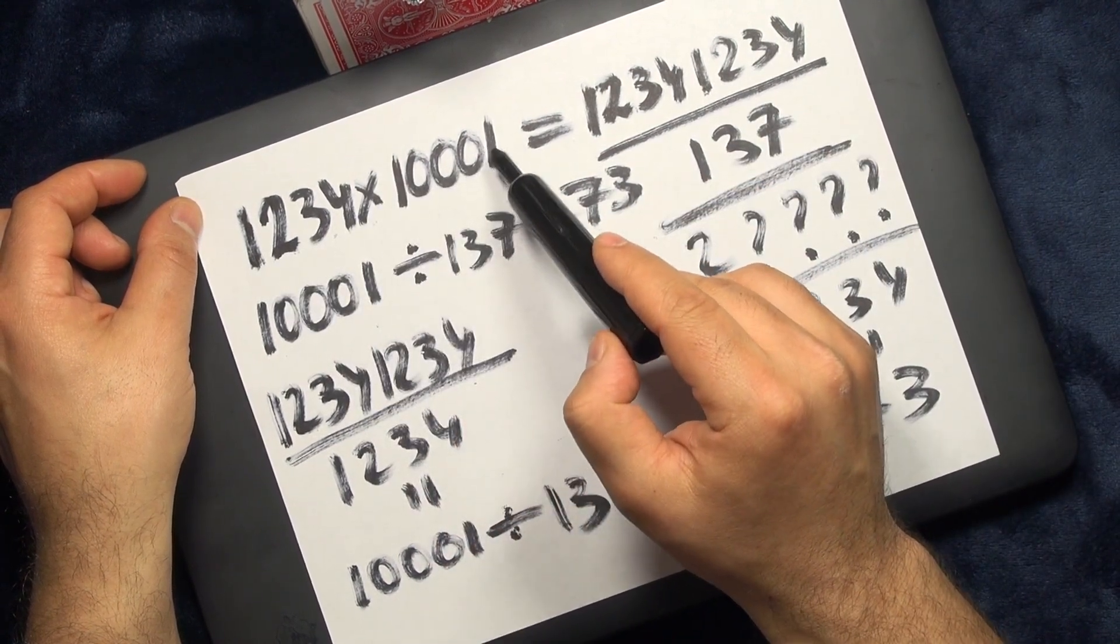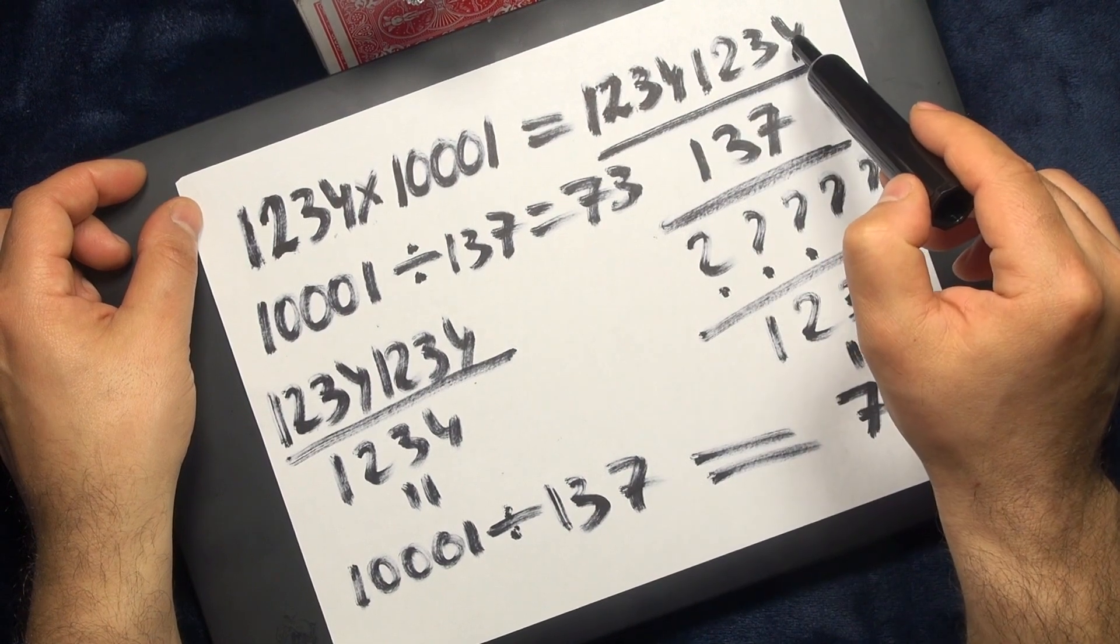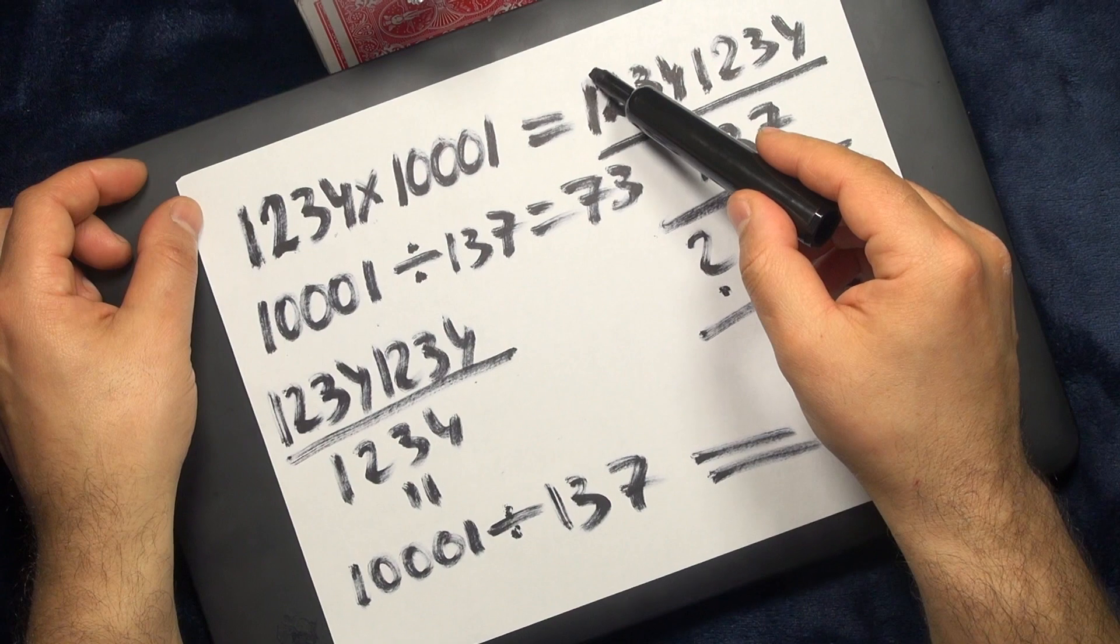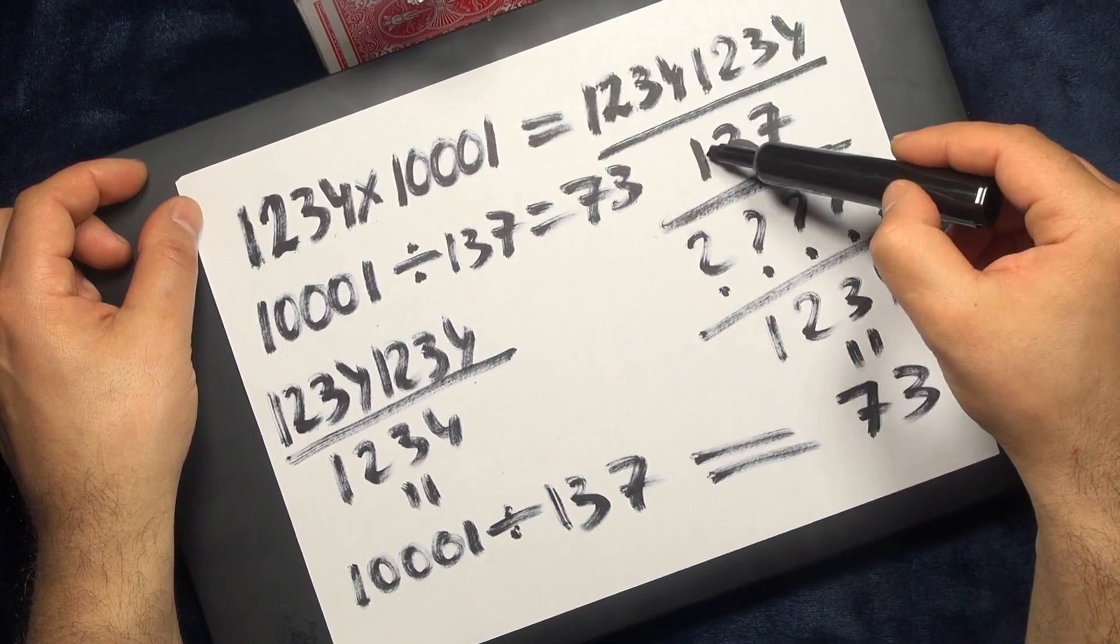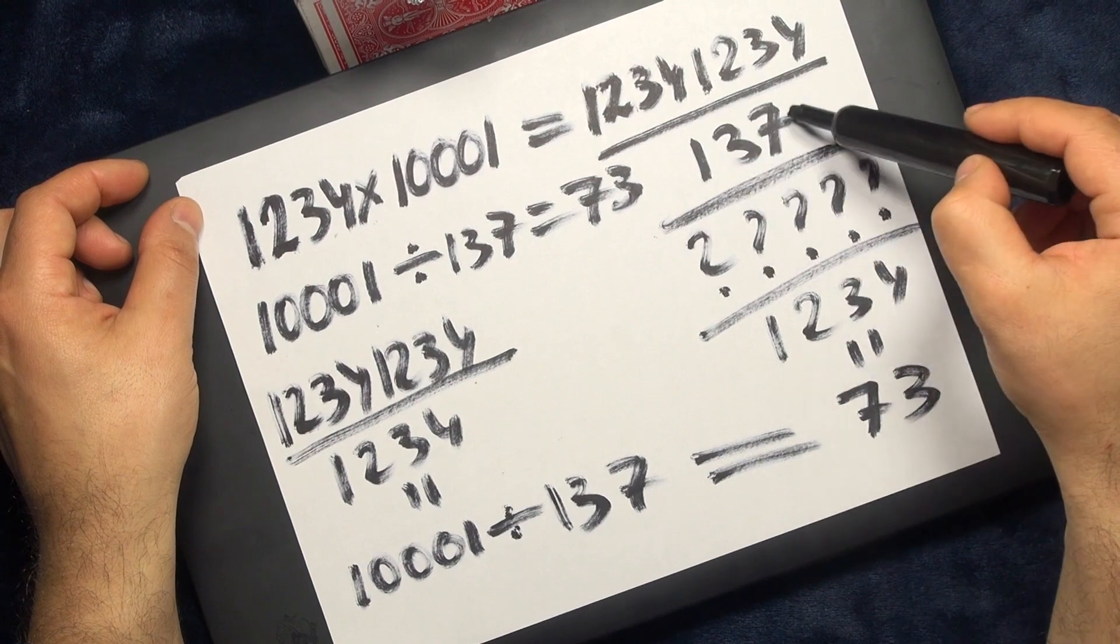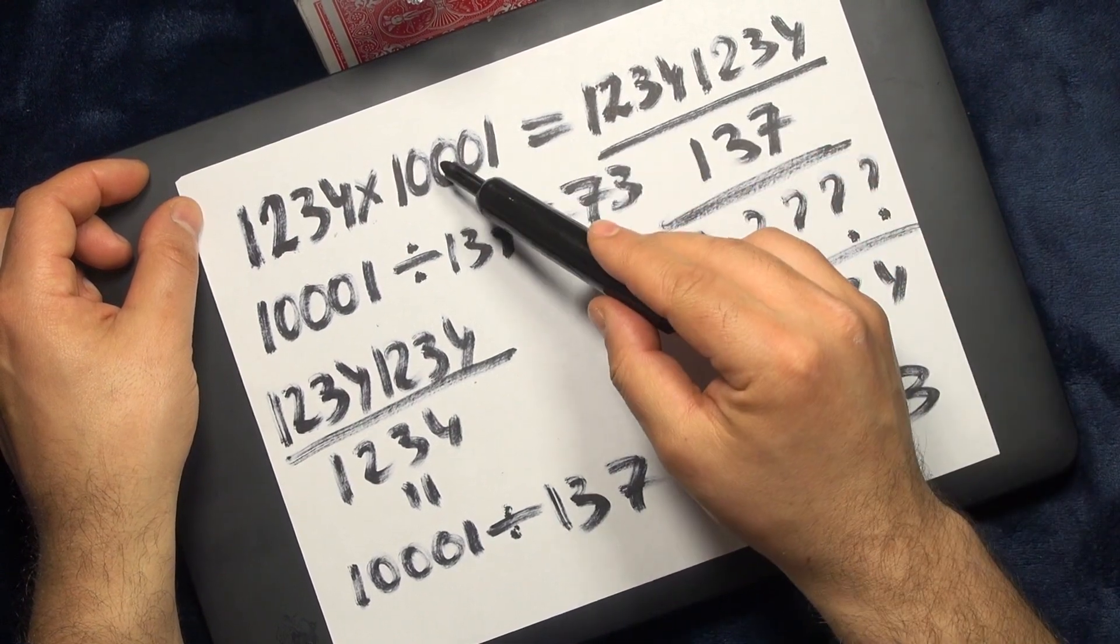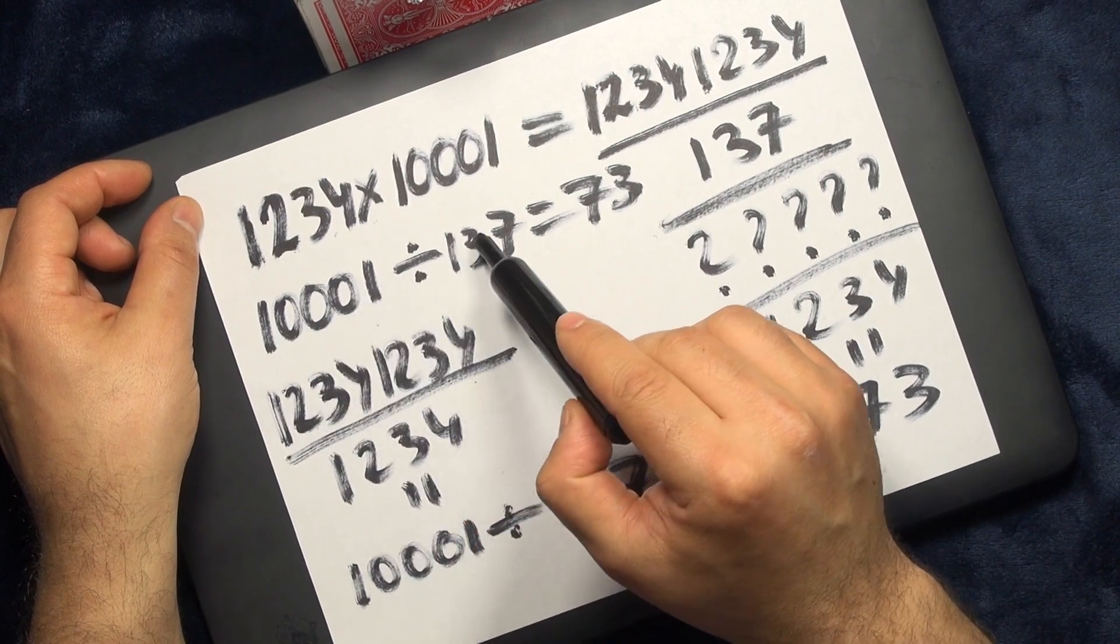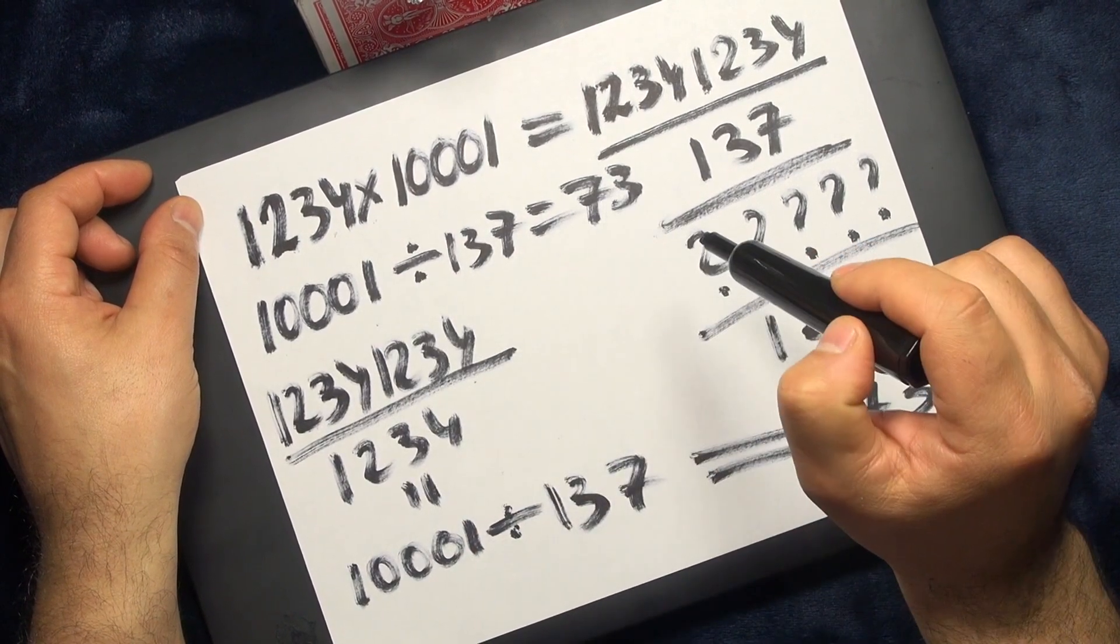It would become this number. So then the next step is I asked you to divide this number by 137. This 137 is not a random number. I took this number from 10,001. If I divide ten thousand and one by 137, it becomes 73.